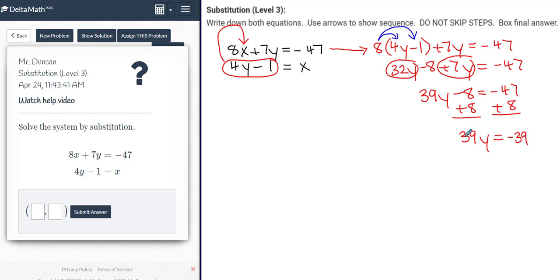Which is nice, because to get rid of this multiply 39 times y, I'll divide by 39 on both sides, which makes my division on the right side really easy. 39 over 39 reduces to the number 1. 1 times y is y, and then negative 39 divided by positive 39 is negative 1.